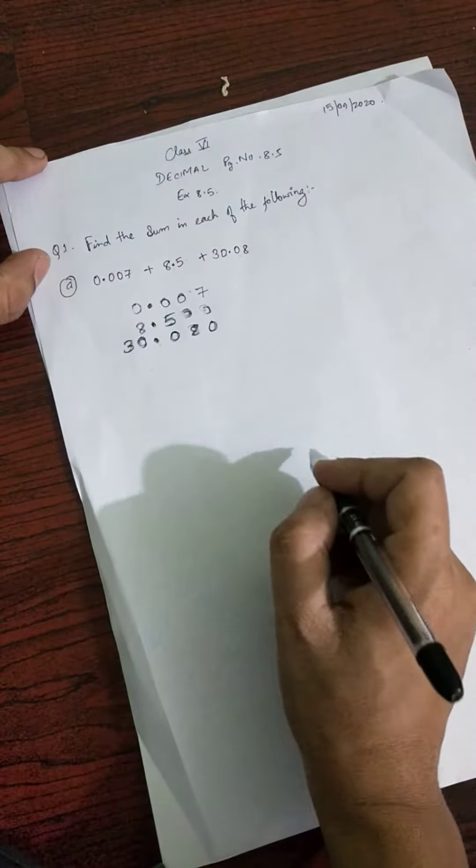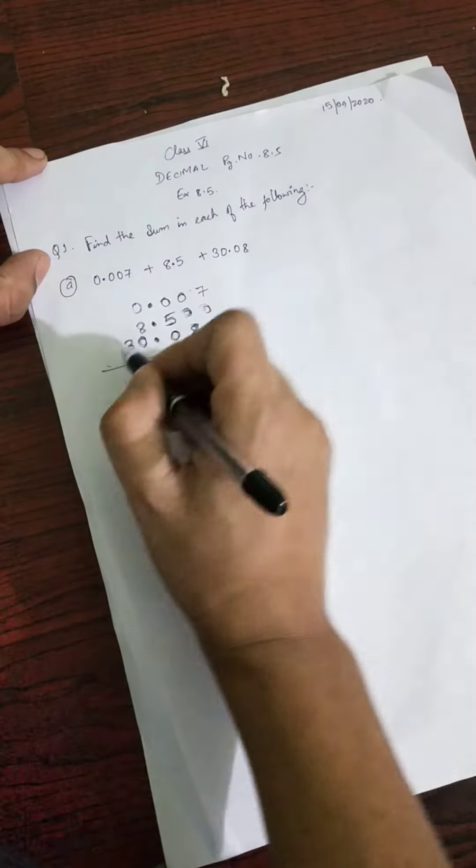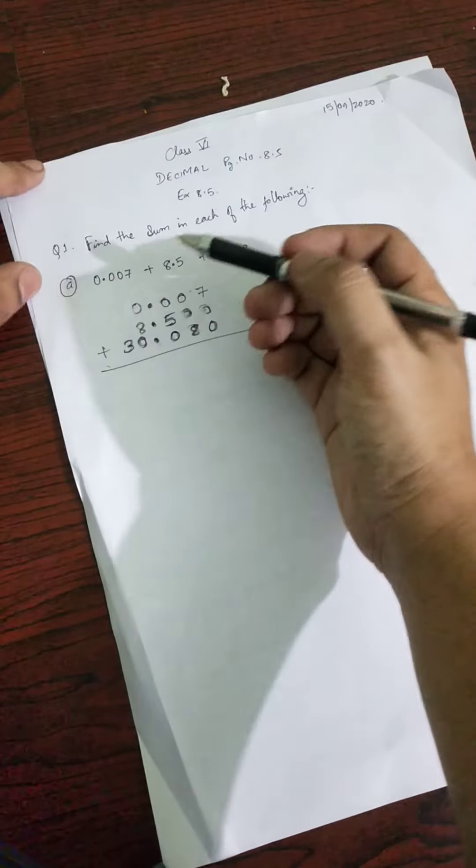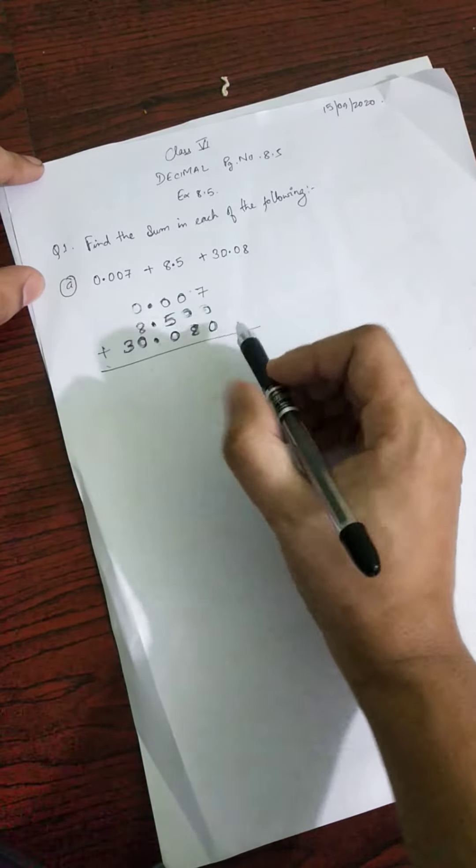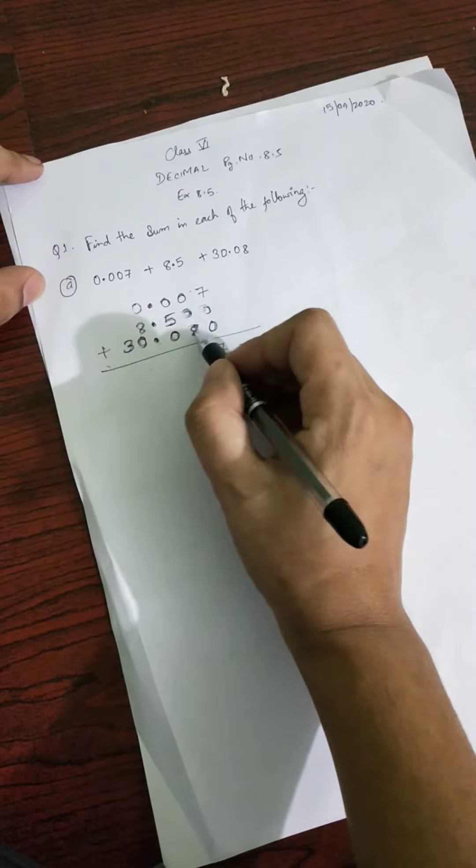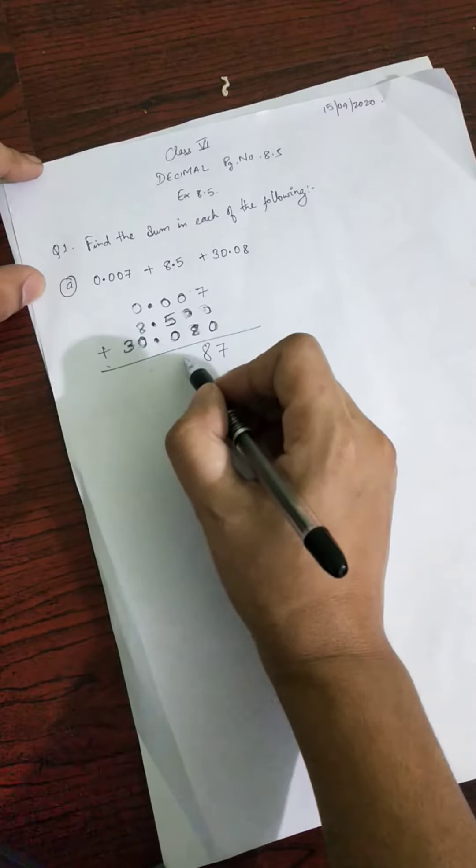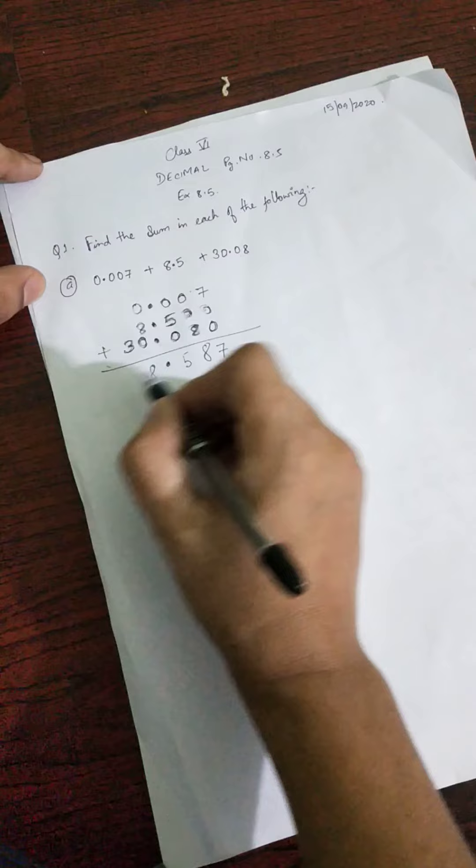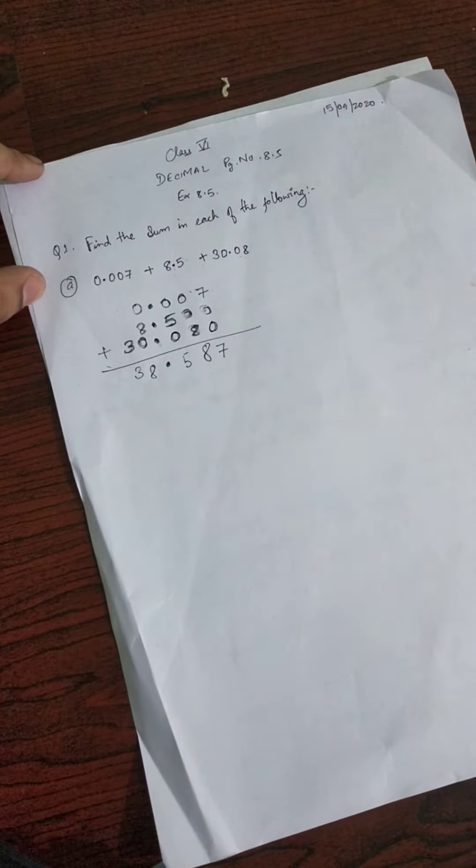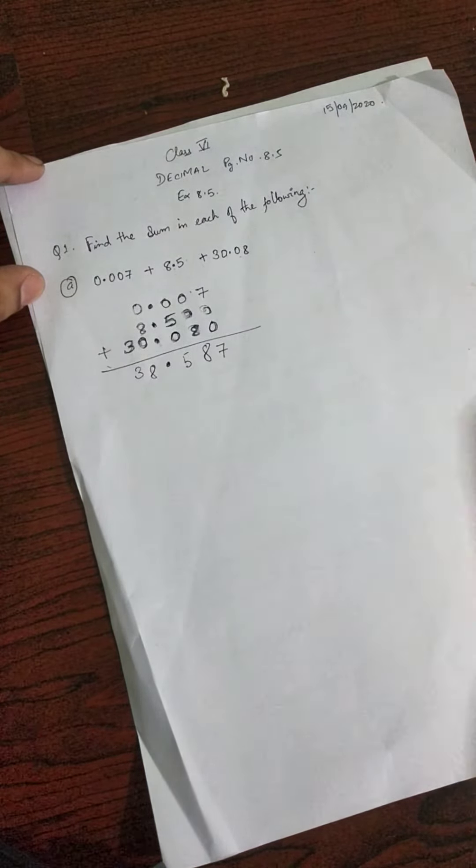Let us add. When adding decimal numbers, you have to make the decimal point in a straight line. Seven, zero, seven, eight, zero, eight, five, and the decimal point in a straight line, eight and three. That's it.